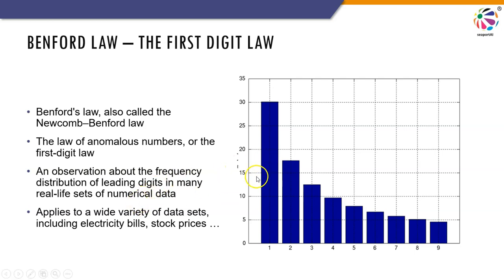We basically create a frequency distribution, and this applies to a wide variety of datasets like electricity bills, stock prices, invoice numbers, purchase order numbers, inventory, and so on. Whenever you have a set of numbers, you can understand how many times the first digit occurs in your dataset and compare it against what Benford suggests.